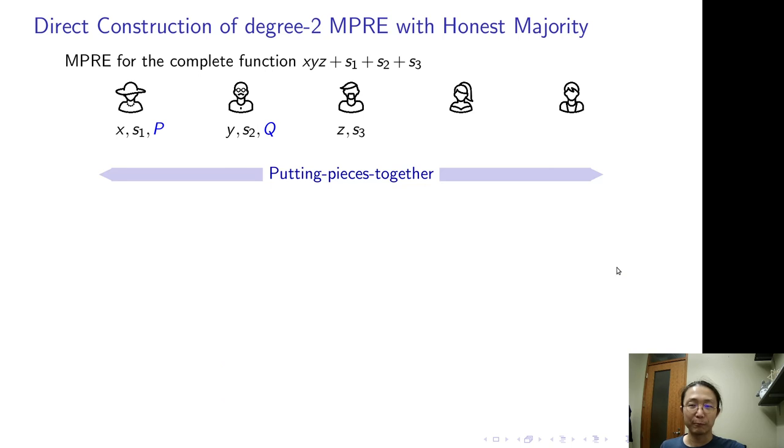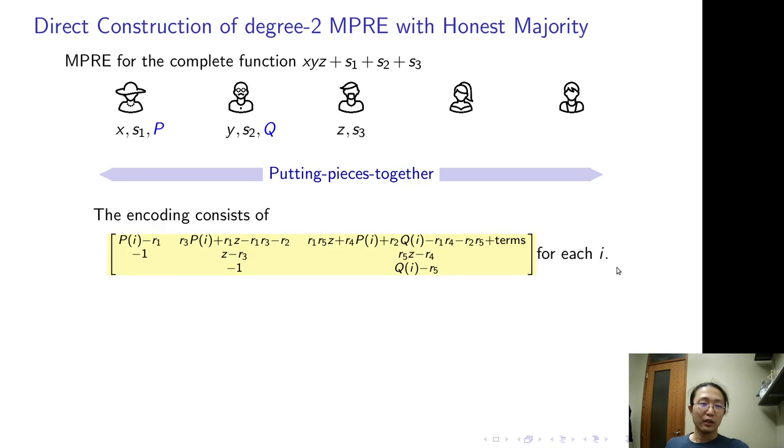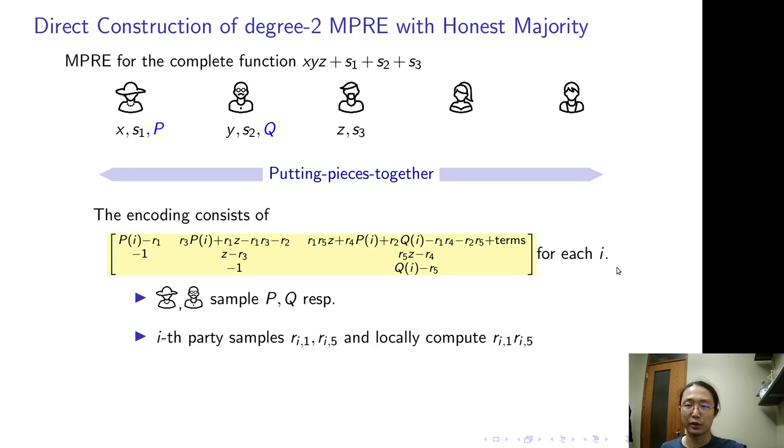Putting all this together, this is the randomized encoding for the complete function, where P to Q are polynomials sampled by the parties holding X and Y. The i-th party also samples corresponding R1, R5, then locally multiply them to reduce the degree of the global computation. The rest of the randomness can be jointly sampled. That's it, the MPRE in one slide.